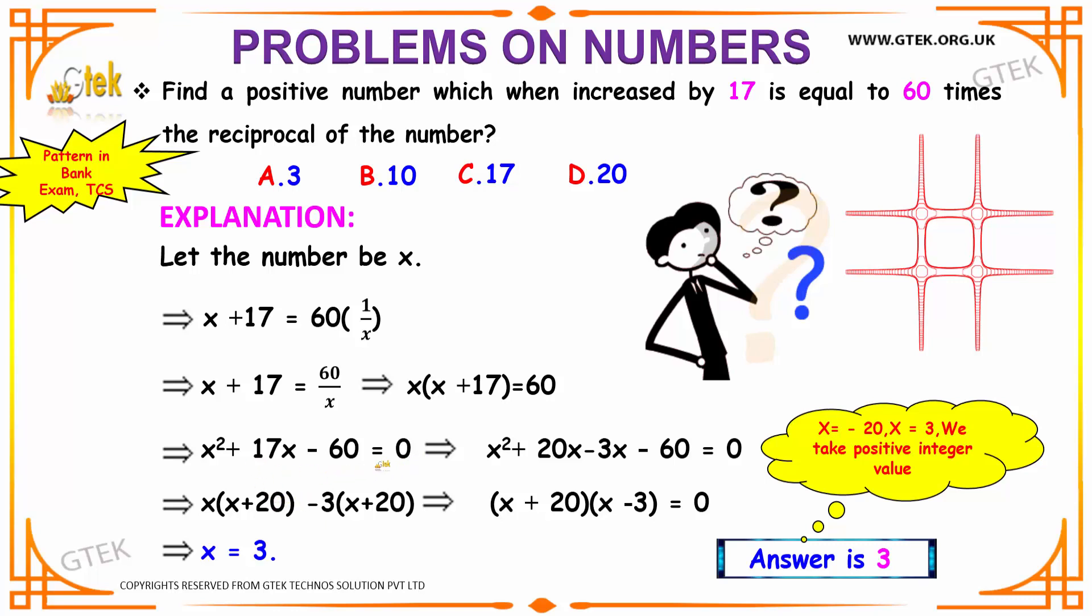Solving it further, you can write 17 as 20 - 3, that is x² + 20x - 3x - 60 = 0.